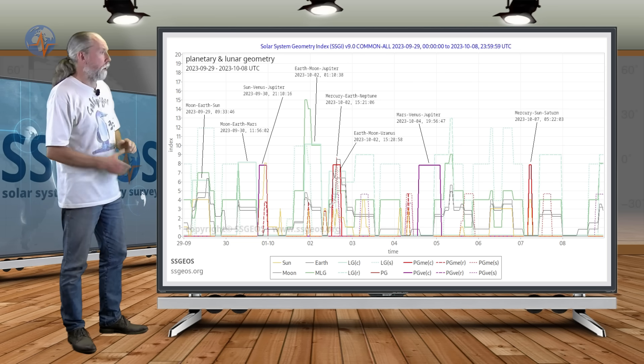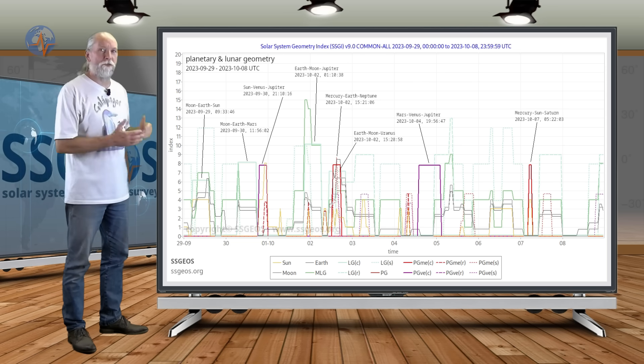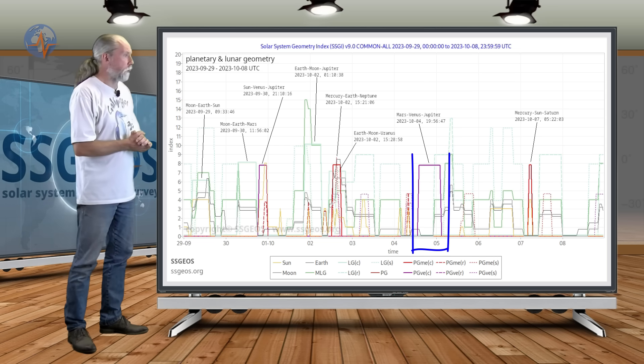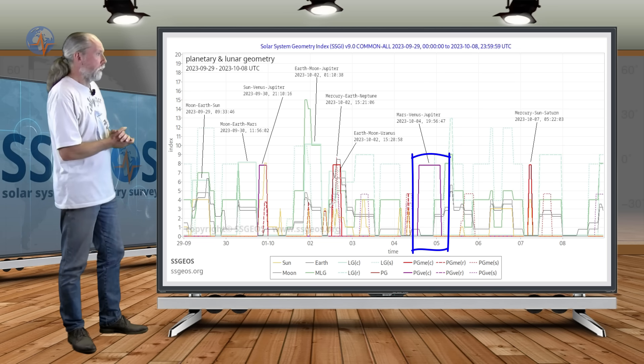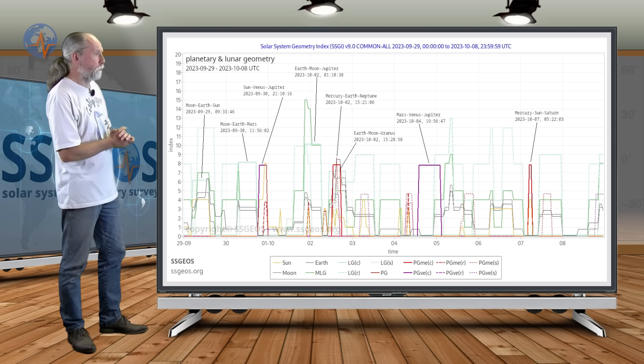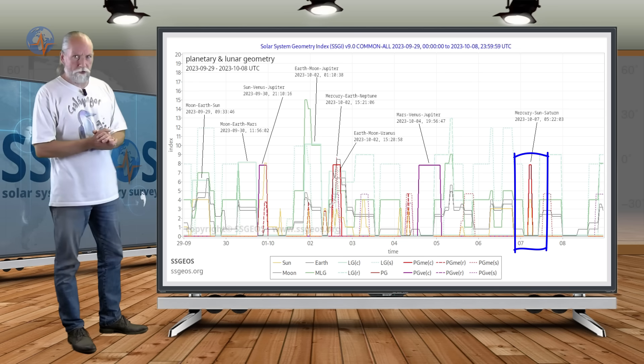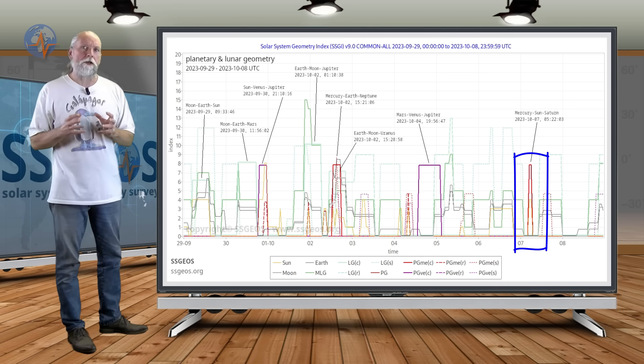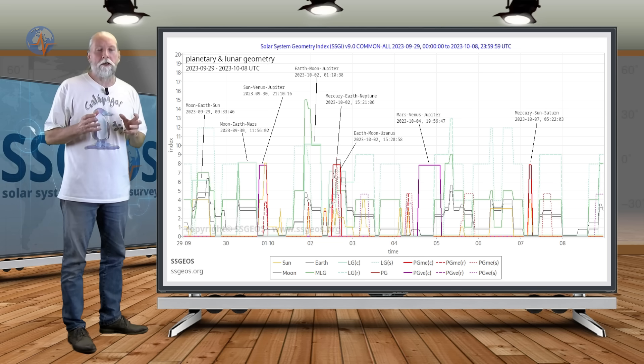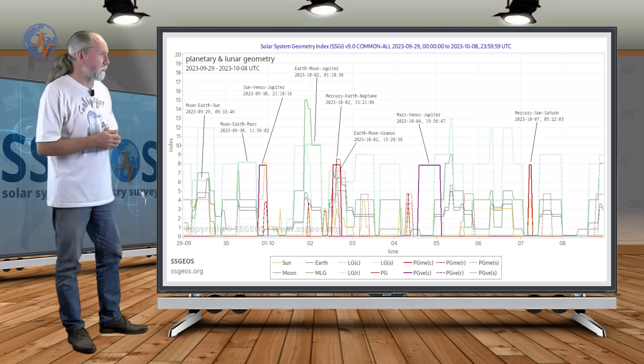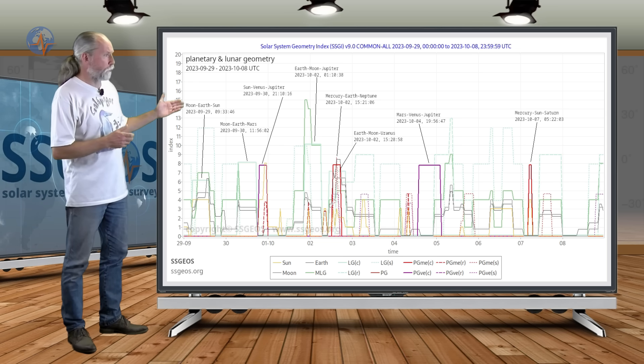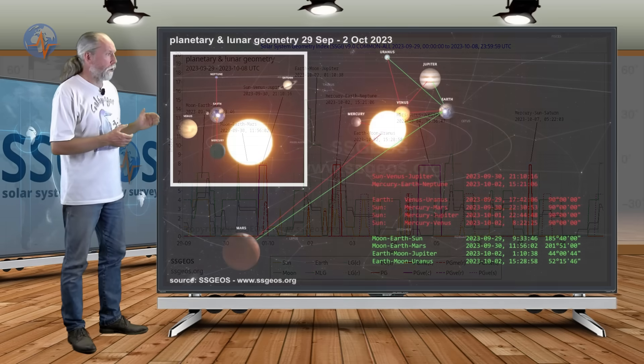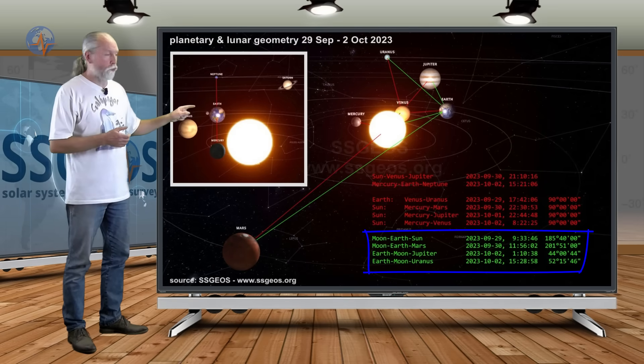And then also two more planetary conjunctions, like I said, spread out over the week. Mars-Venus-Jupiter on the 4th, and also Mercury-Sun-Ceres, and that will be on the 7th. So there's no clustering of planetary conjunctions that will make it very easy to isolate critical days. Going by the planetary and lunar geometry that we have in the coming days, a sequence of lunar conjunctions.